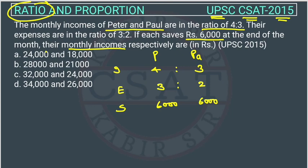One method is to solve through options by checking all the answer choices. Suppose the incomes are 24,000 and 18,000 — that is in the ratio of 4 is to 3. Then deduct 6000 from each to get expenses and check if they satisfy the expense ratio.